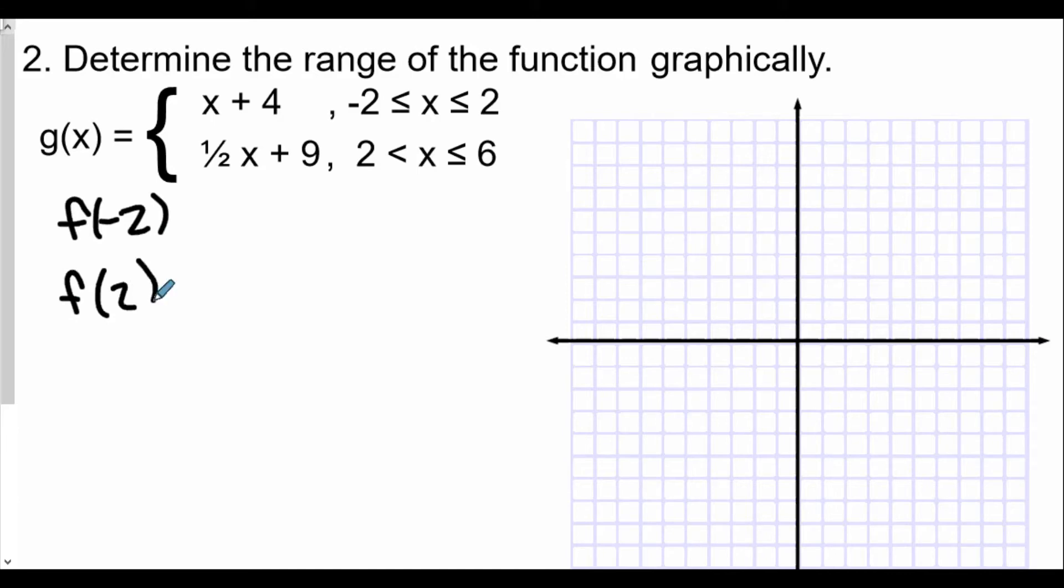Since it's a linear function, we can plot those points and connect the segment. Here we have f(-2) because it belongs to x plus 4, we'll do negative 2 plus 4, which gives us 2. Our coordinate will be (-2, 2). Then we plug in 2 to x plus 4: 2 plus 4 equals 6, so we have the coordinate (2, 6).